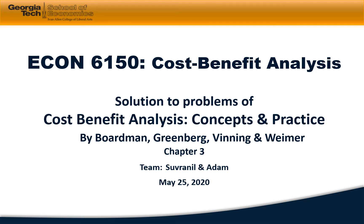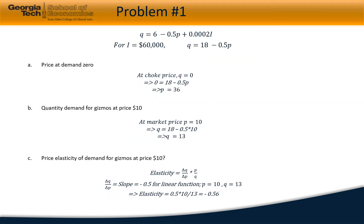Hello, welcome to the solutions to the problems from Chapter 3 of the book Cost-Benefit Analysis: Concepts and Practice by Boardman, Greenberg, Vining, and Weimer. The team is Souvranil and Adam. In the first problem we are given quantity is equal to 6 minus 0.5p plus 0.0002 income.